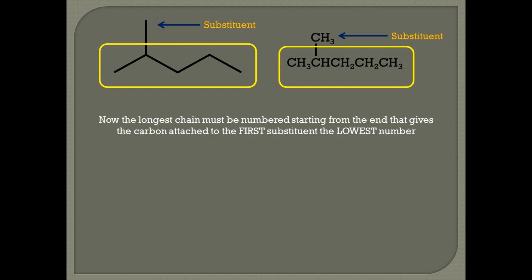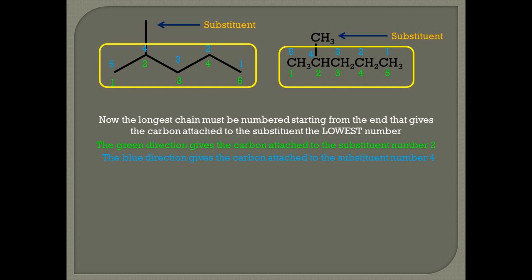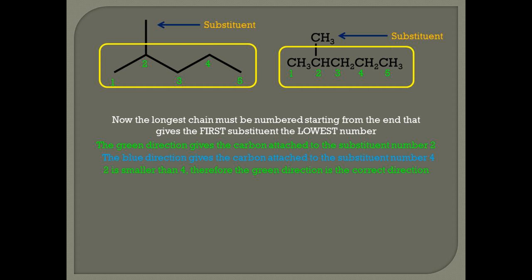Rule three. Now that the longest chain has been identified, we have to number it in such a way that the carbon attached to the first substituent gets the smallest number. If we number from left to right along the green direction, the substituent is attached to carbon number two — that number two is called the locant. If I look at the blue direction, which is from right to left, the substituent is attached to locant four. Since two is smaller than four, the green direction is the correct direction to number this carbon chain.